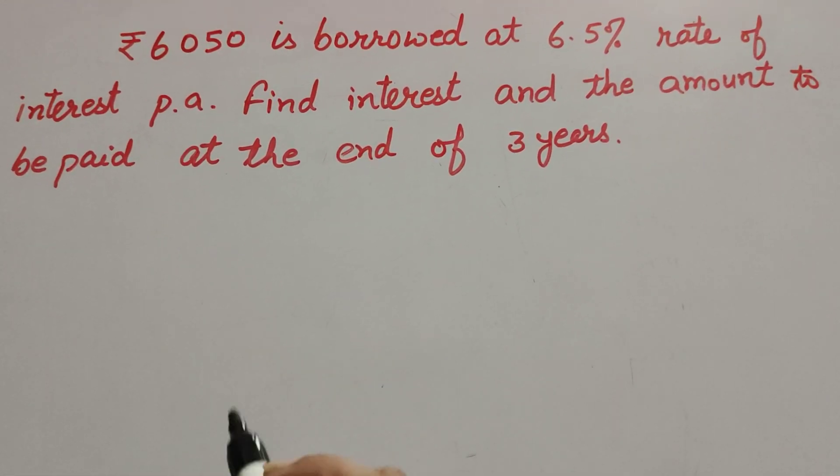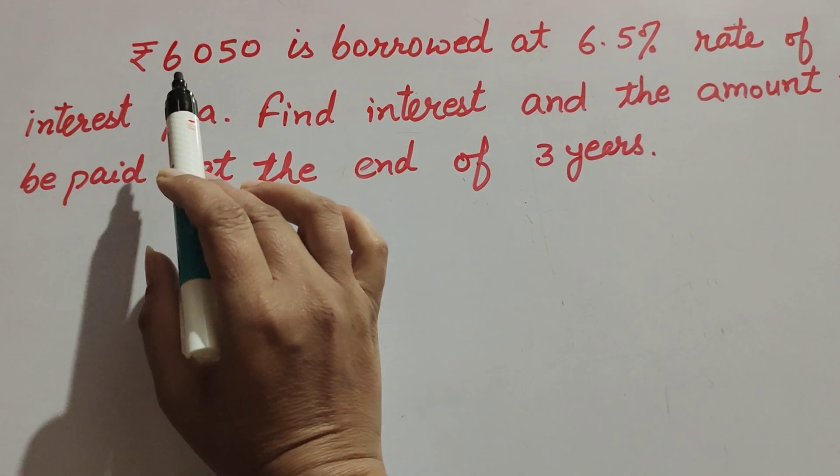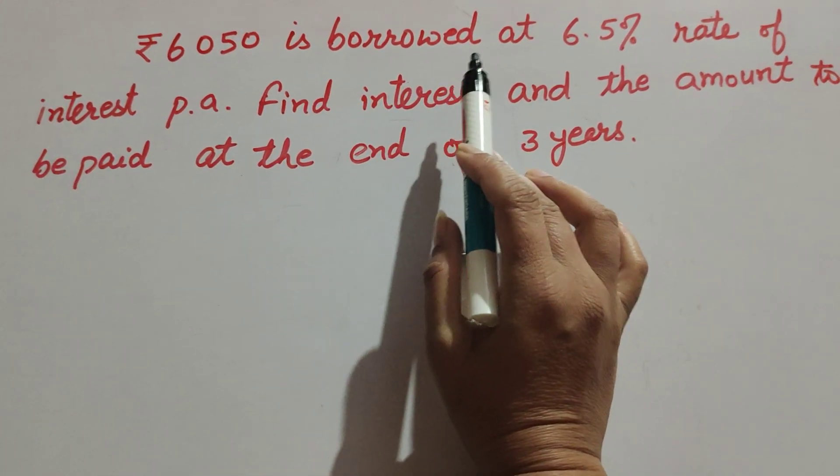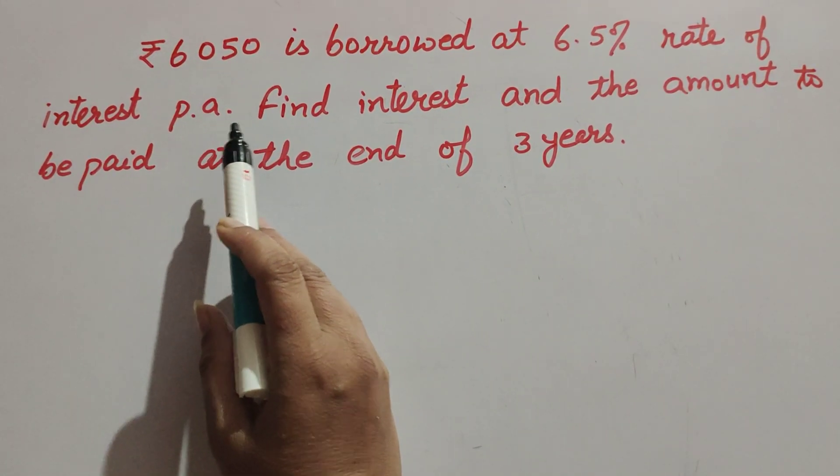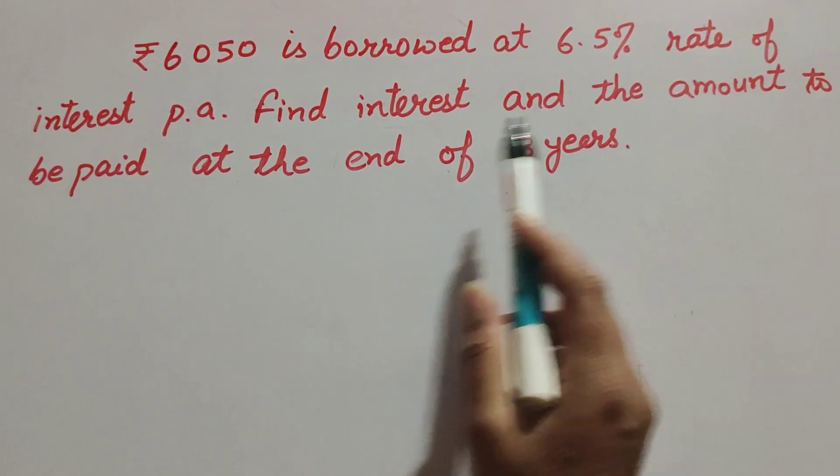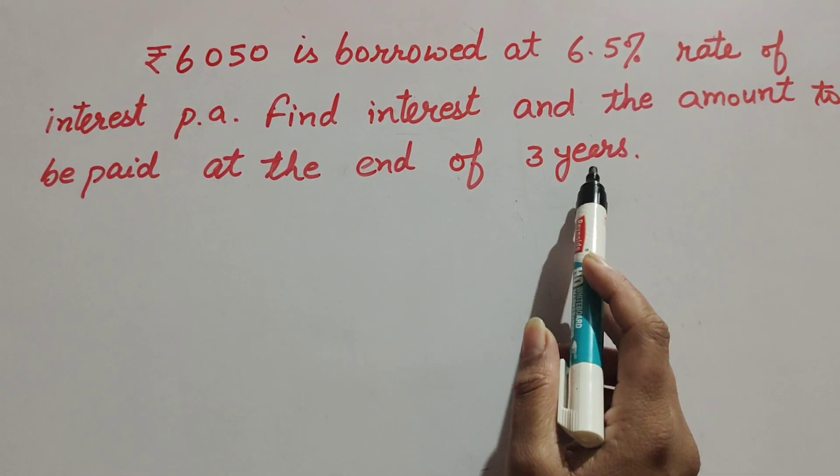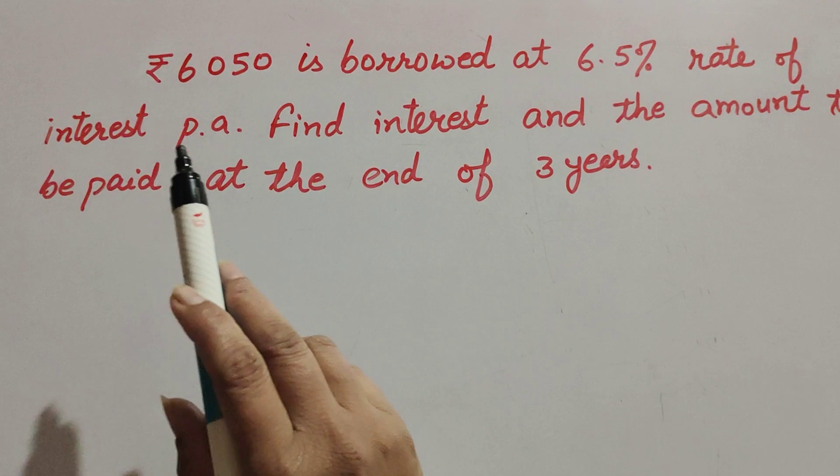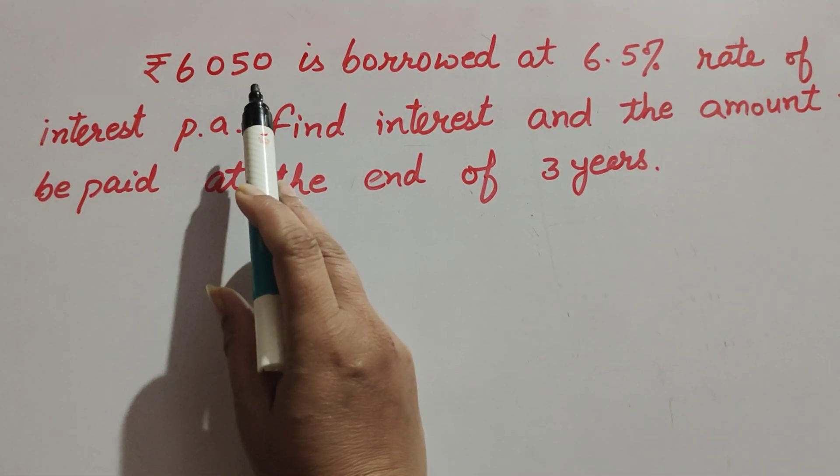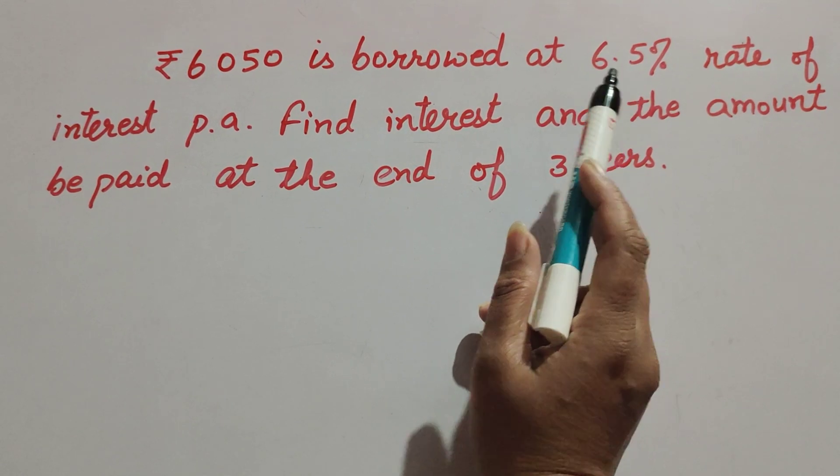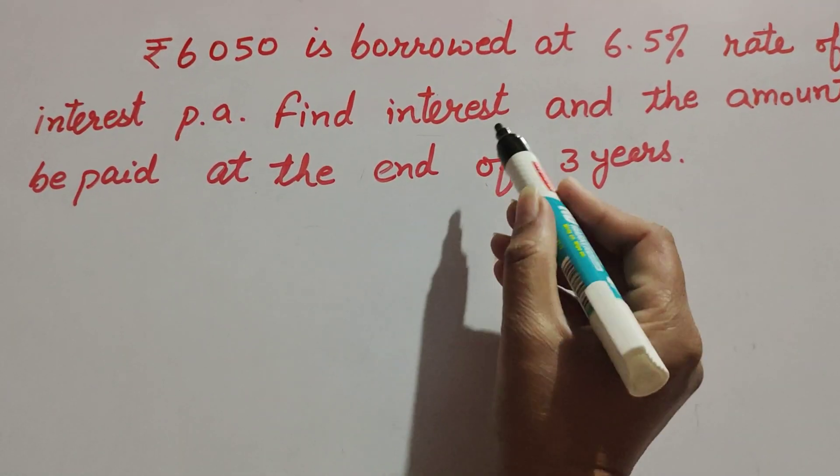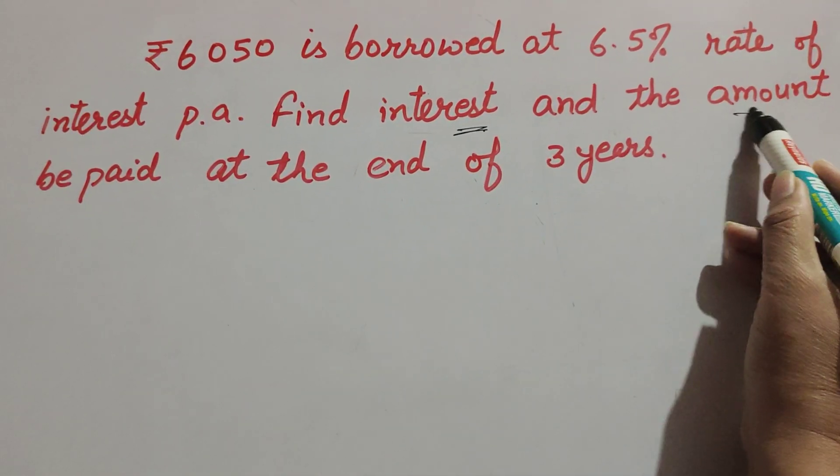Hello friends, welcome to my channel. In this video we discuss: rupees 6050 is borrowed at 6.5% rate of interest per annum. Find interest and the amount to be paid at the end of three years. In this question, the amount borrowed is 6050, rate of interest 6.5%, and we find first the interest then the total amount.